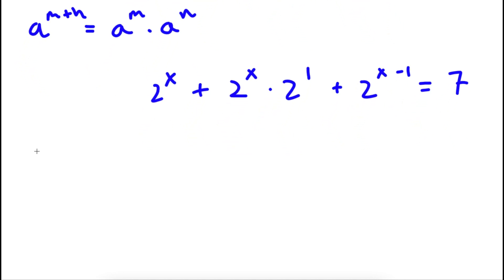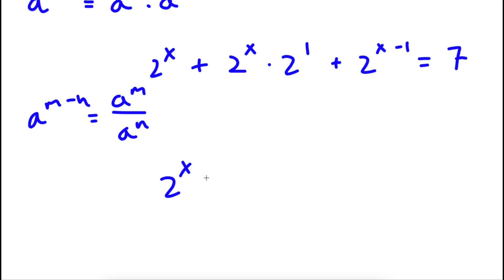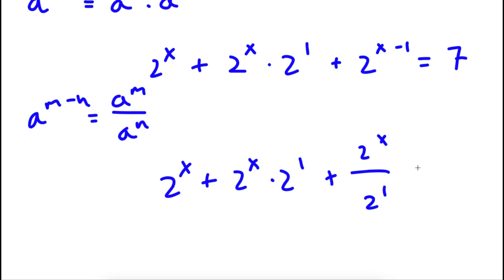Now, if I have something in the form a to the power of m minus n, this is equal to a to the power of m over a to the power of n. So 2 to the power of x minus 1, we can rewrite as 2 to the power of x over 2 to the power of 1.